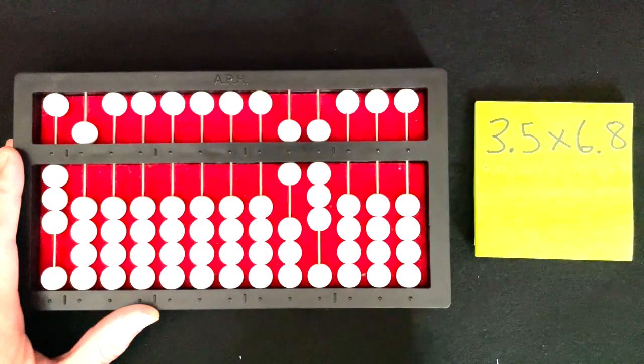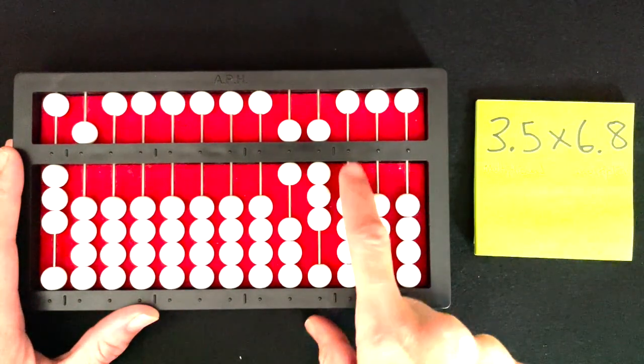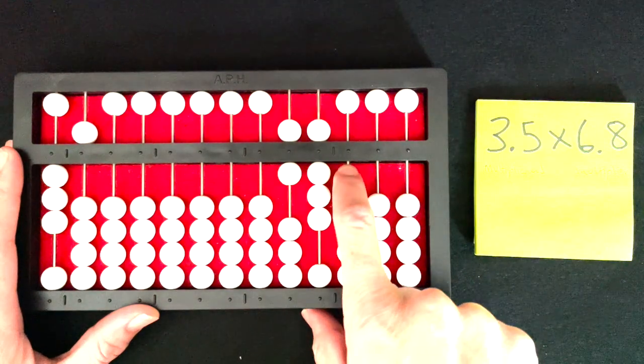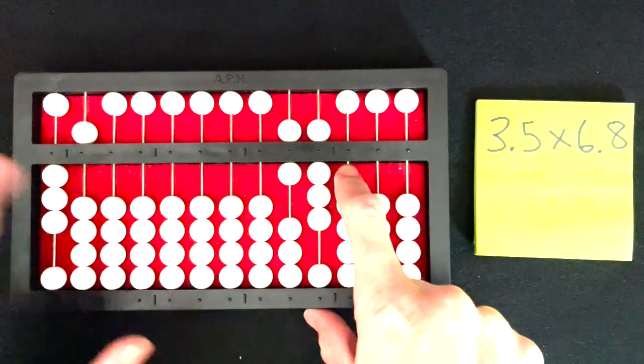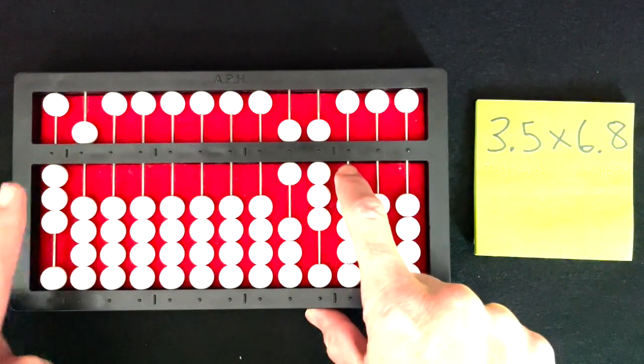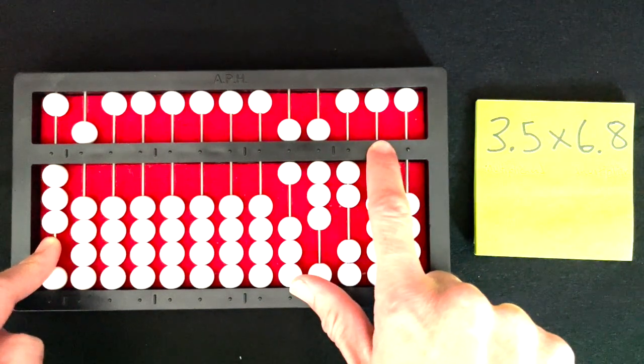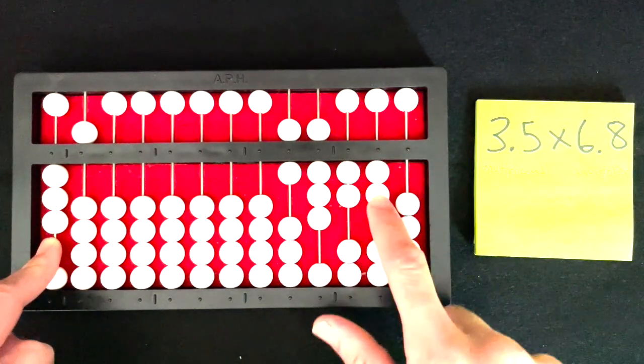Now I've set my multiplier and my multiplicand. I'm going to put my left index, my right index finger on the rod directly to the right of my multiplier, and I'm going to multiply 8 times 3, which is 24, it's a 2-4. I'm going to set 1, 2, and then go to the next rod, the tens rod, and set 4: 1, 2, 3, 4.